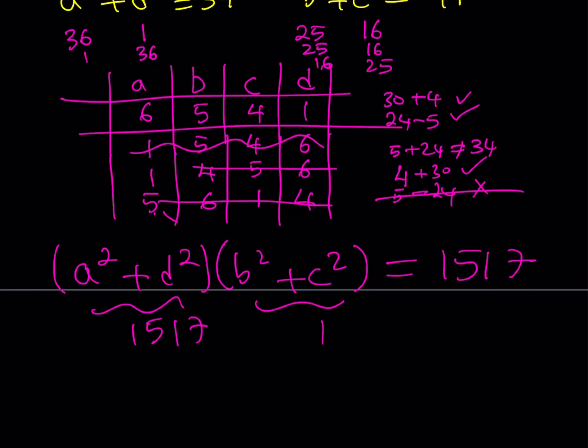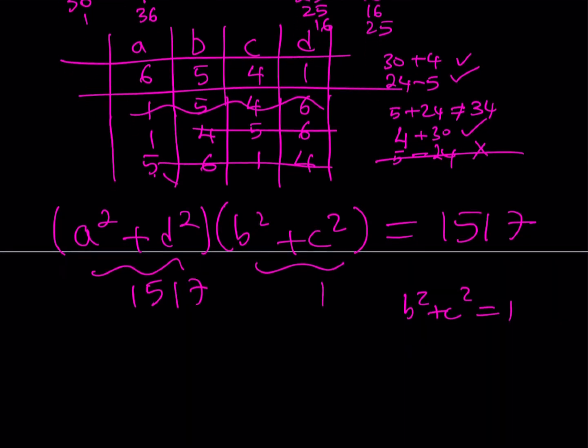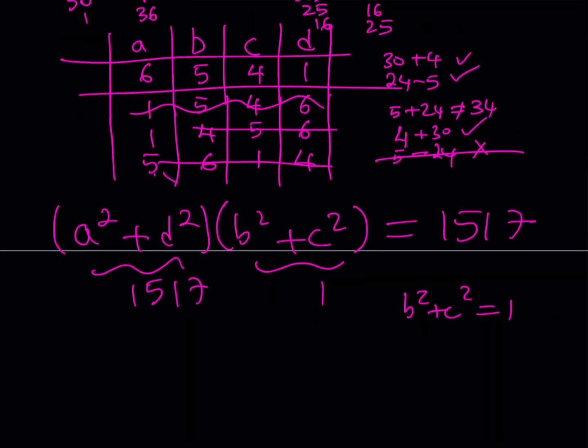How is that possible? First of all, if B² + C² = 1, that means one of them has to be 0, the other one is either 1 or negative 1. So for example, I can have 1, 0 will work, negative 1, 0 will work, 0, 1 will work, and 0, negative 1 will work. But this is only for B and C.